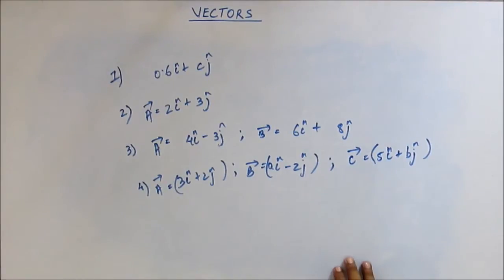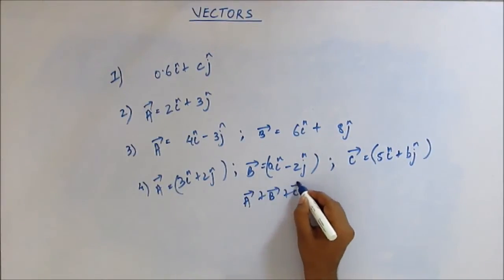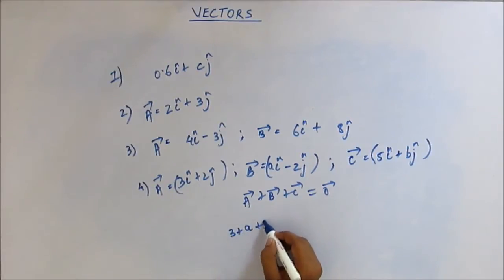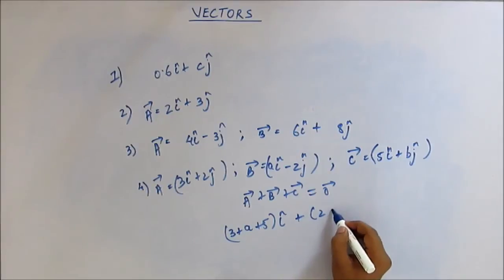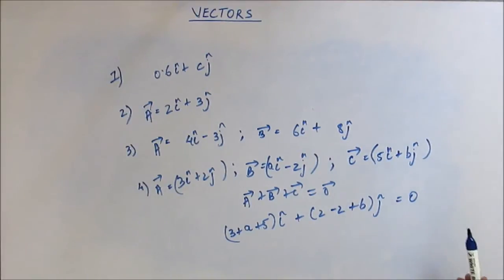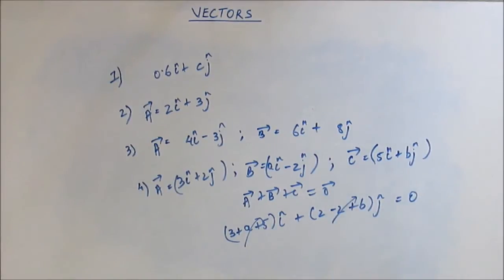If these are the only 3 forces acting on the body and the body is at rest, then the summation of these 3 forces should be zero — because if the body is at rest, the net force on the body is zero. If there were a net force, the body would move. So the summation of all 3 forces should be zero, meaning A vector plus B vector plus C vector should be a null vector. Both the i and j components must individually be zero.